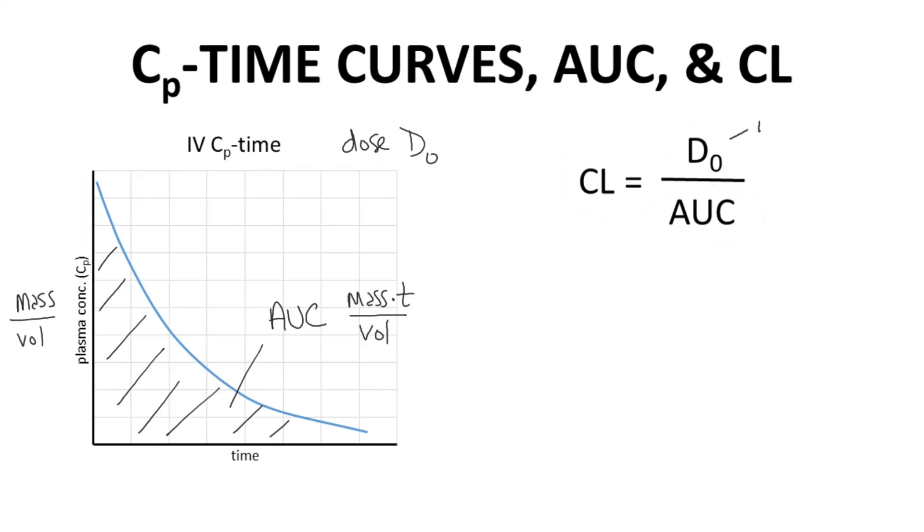Let's add our units. And you can see clearance has units of either volume, that's plasma volume per unit time, or volume per unit time per kilogram patient mass.